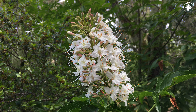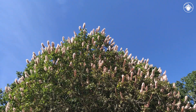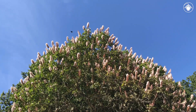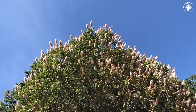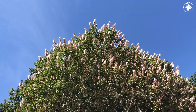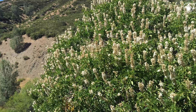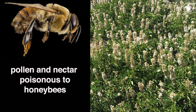Only a few flowers per inflorescence also produce a functional pistil — the female part of the flower. It is from these flowers that the fruit will develop after pollination by one of a variety of insect pollinators, including moths and butterflies like the one in this video. Native bees are also attracted to California buckeye flowers and actively visit them for pollen and nectar. Honey bees will visit too, but the pollen and nectar is reportedly poisonous to these non-native visitors.